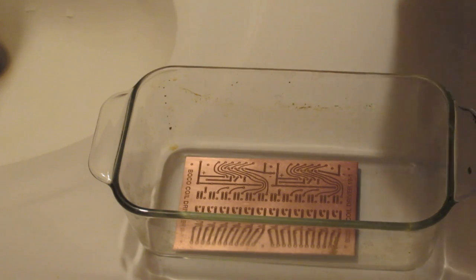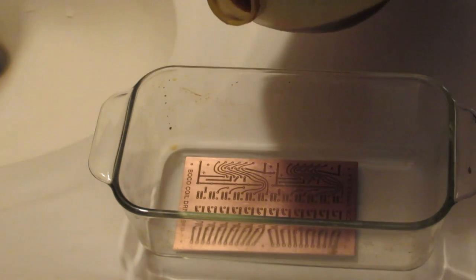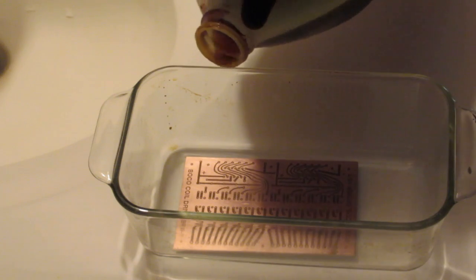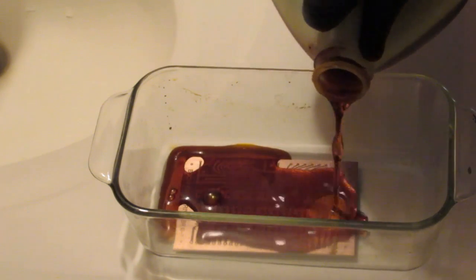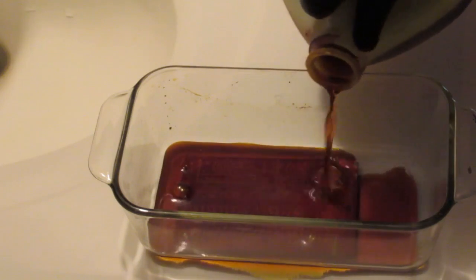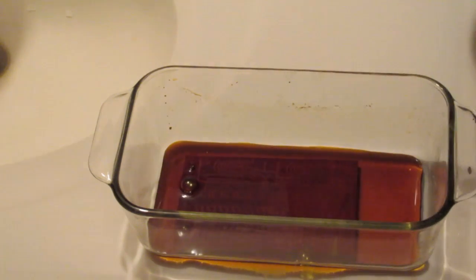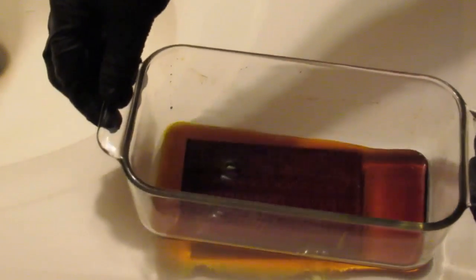If you use other etchants, you should check the safety data sheet for those as well and check the compatibility with the photo emulsion. I do not dilute the ferric chloride with water. I have found the photo emulsion tends to fall away from the board when the etchant is diluted.